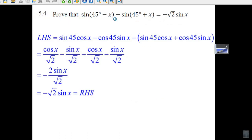Prove that sine 45 minus x minus sine 45 plus x equals minus root 2 sine x. This is a trig identity thing, so we start with one side, the left-hand side. And then all we do is expand this using the formula that you've got, the identity on your formula sheet.